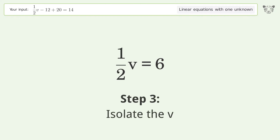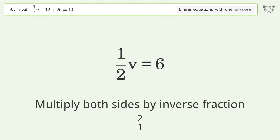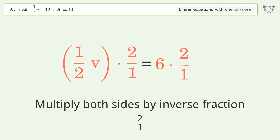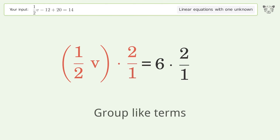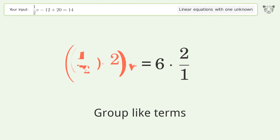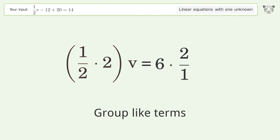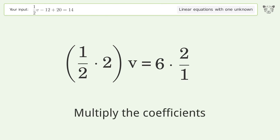Isolate v by multiplying both sides by the inverse fraction 2 over 1. Group like terms, then multiply the coefficients.